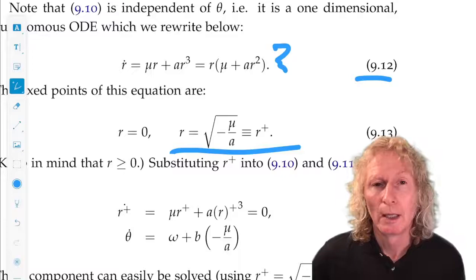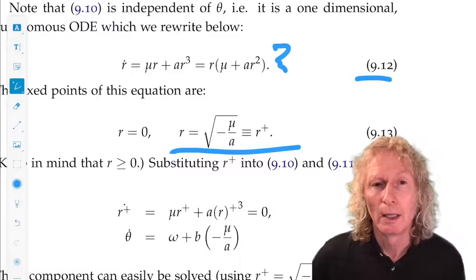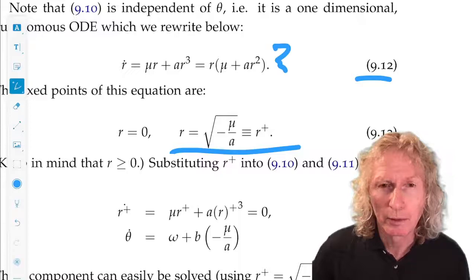So mu is a bifurcation parameter, and a is a constant. So there are two cases to look at, a greater than zero and a less than zero. And we'll look at each one individually.